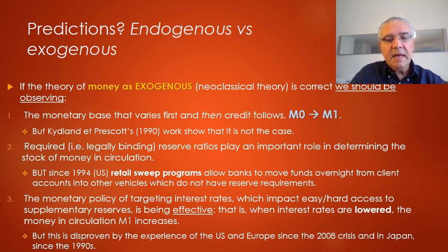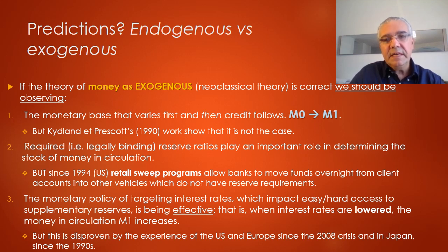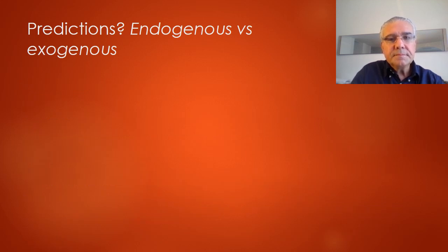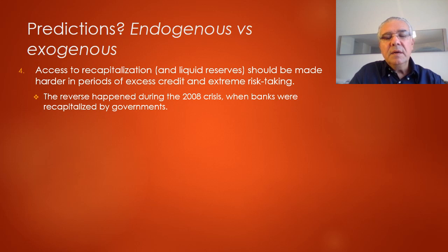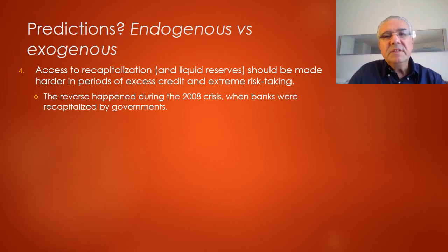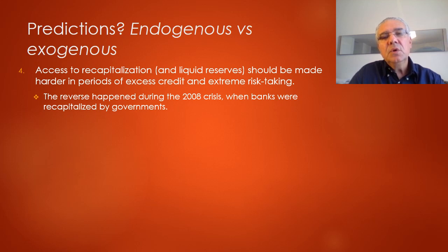The experience we have had in the US and Europe since the 2008 crisis, and the experience of Japan since the late 1980s, has shown that these types of policies are not effective. We should also see market discipline — that access to recapitalization should be made harder in periods of excess credit and extreme risk taking. With government interventions during the 2008 crisis, that outcome didn't happen. That doesn't necessarily mean exogenous theory is completely wrong, but in this case one of its key predictions didn't really materialize.